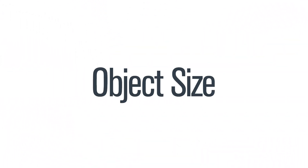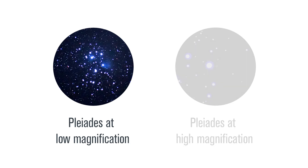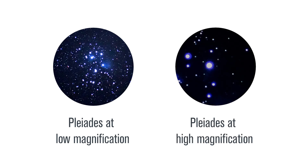Number two: object size. Some objects look better at low magnification. When viewing the same object at a higher magnification, it appears cropped and may be less impressive.